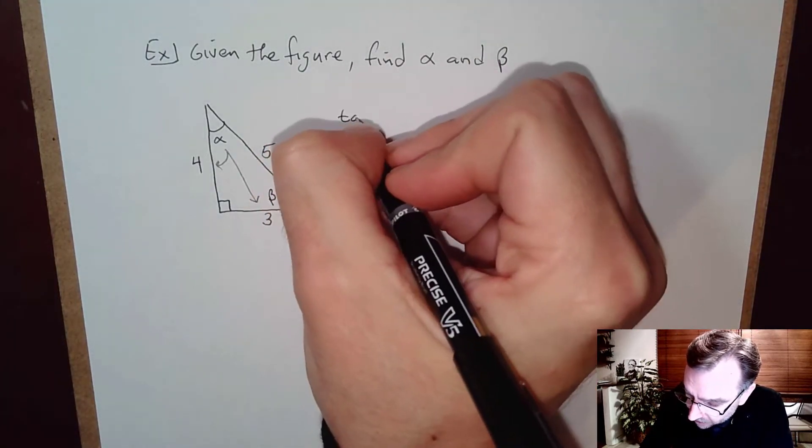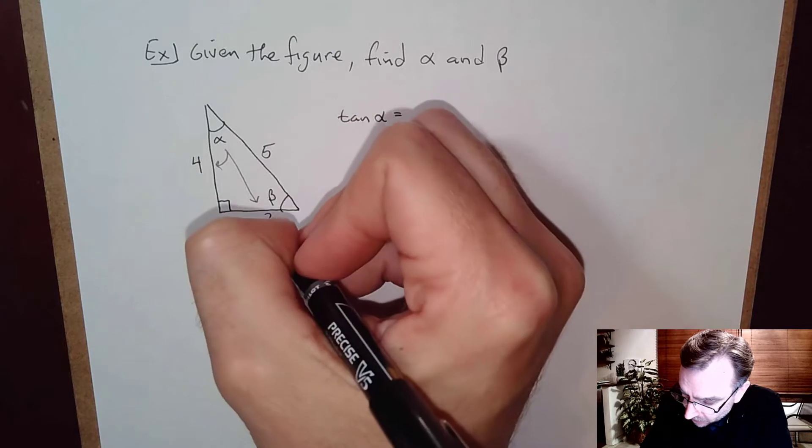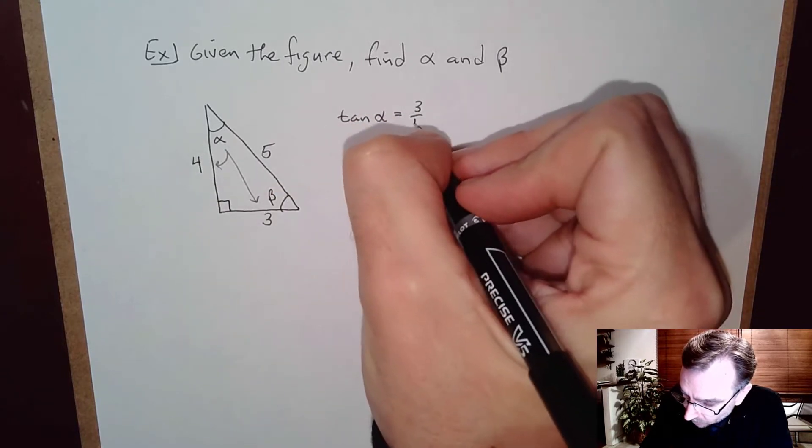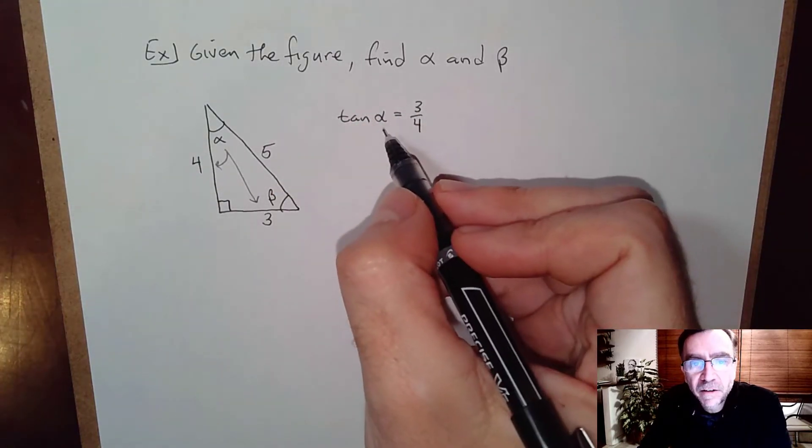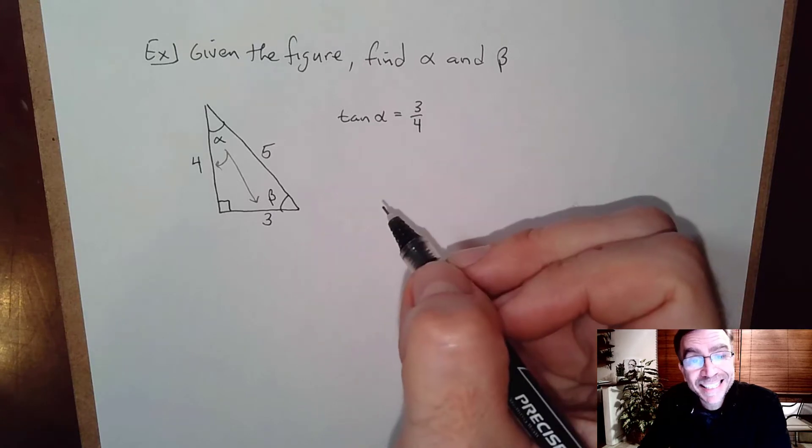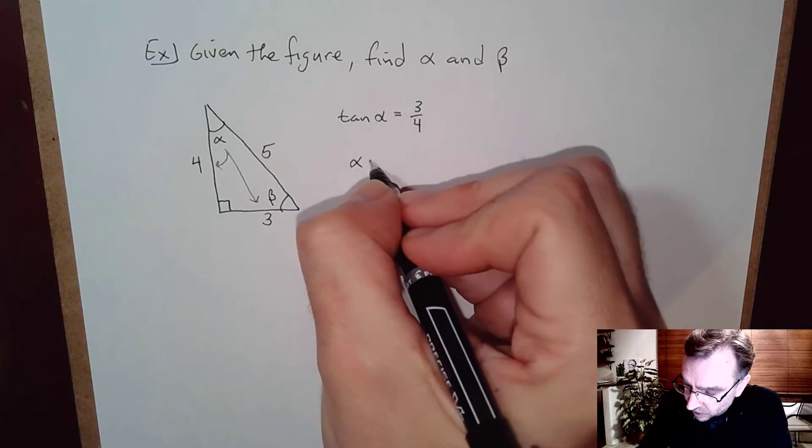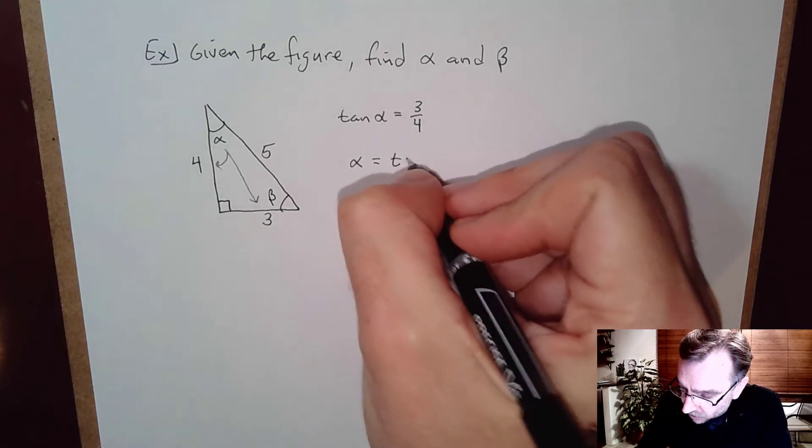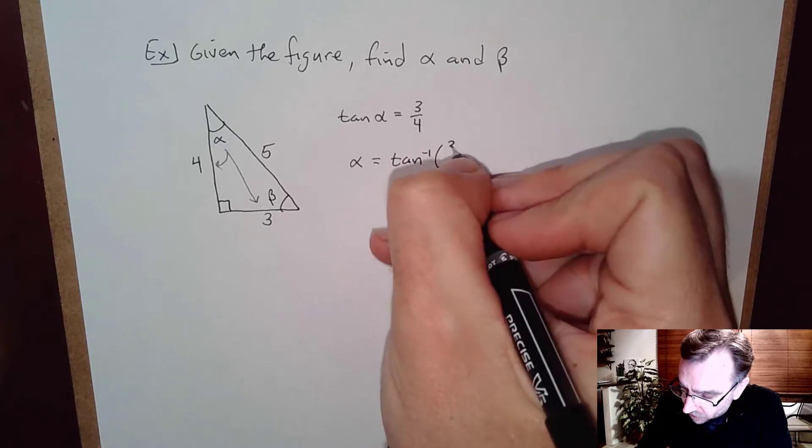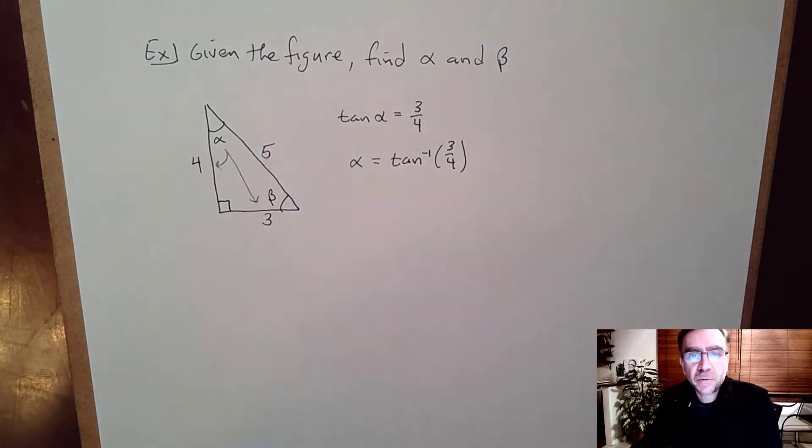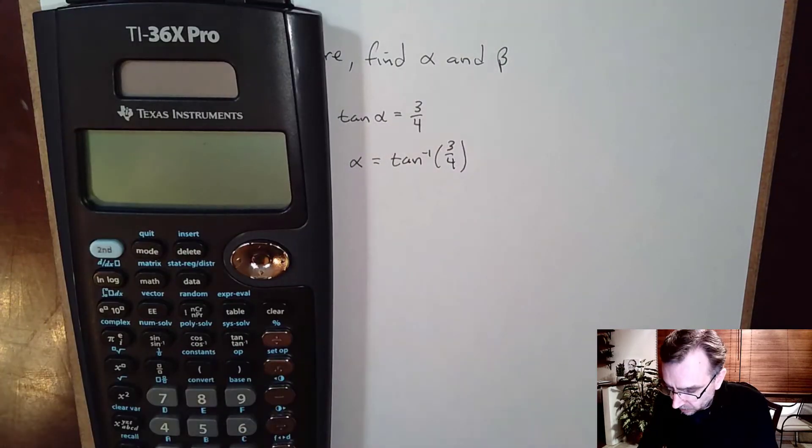So with that I can write tangent of alpha is three-fourths. We're after the angle alpha, so what I'm going to do is apply tangent inverse to both sides. In that case, I'll have alpha equals tangent inverse of three-fourths. Remember tangent inverse returns an angle, and so I can do that on a calculator.